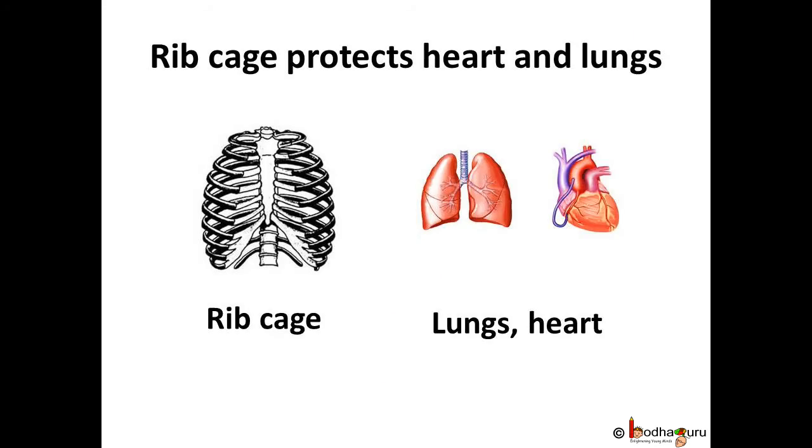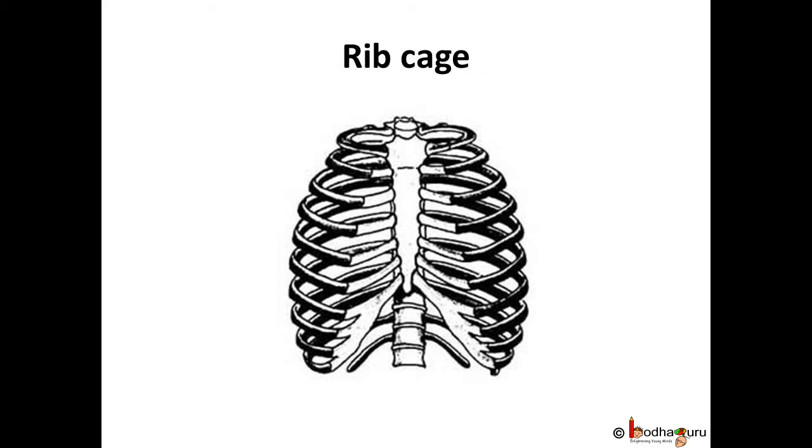Rib cage protects heart and lungs. It is made up of 12 pairs of bow shaped ribs which form a cage. The rib cage is attached to the vertebral column at the back and in the front to the breast bone. Last two pair of ribs are attached at the back and are known as the floating ribs because when they come in the front they are not attached to the breast bone.